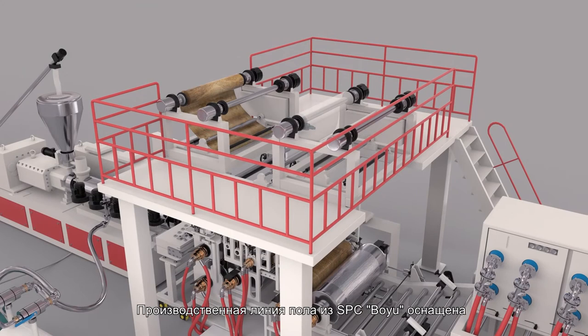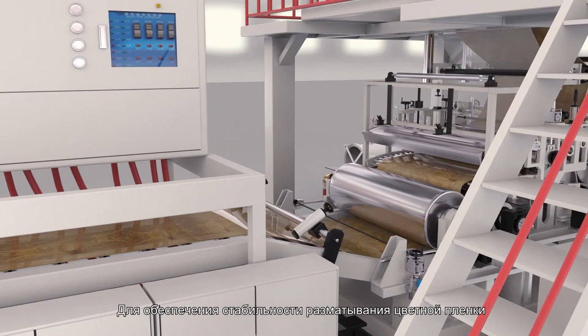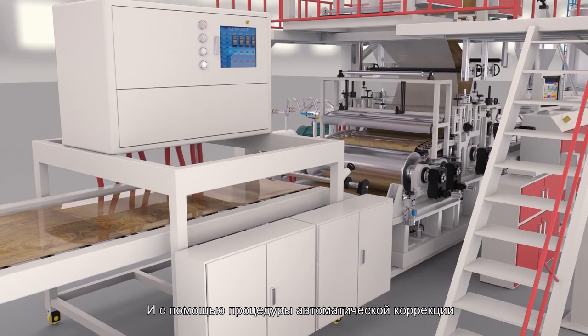The SPC flow production line adopts automatic constant tension control system for output, so as to ensure the stability of color film unwinding. Meanwhile, it can also ensure that the winding roll is not off-site by using the automatic correction program.